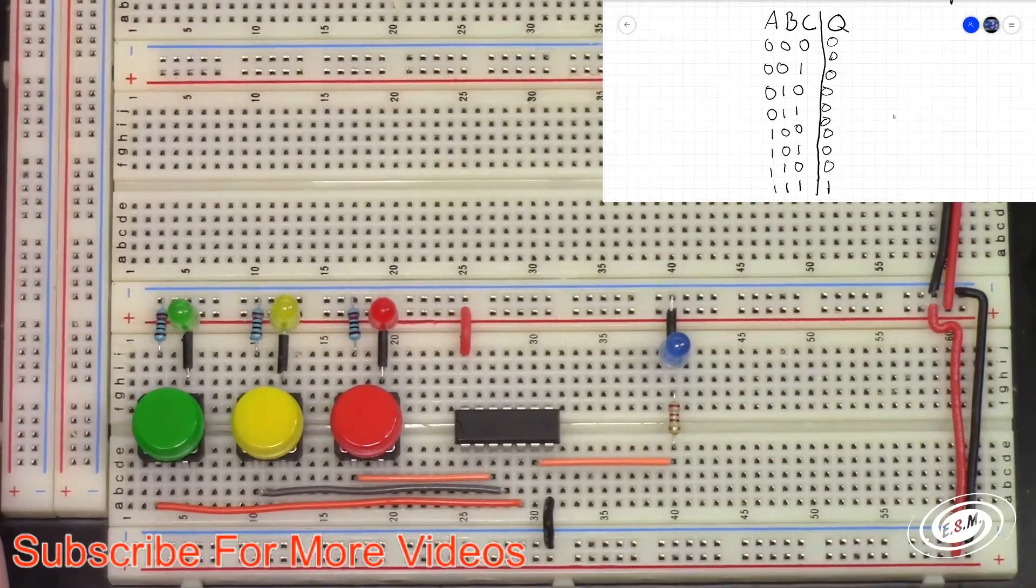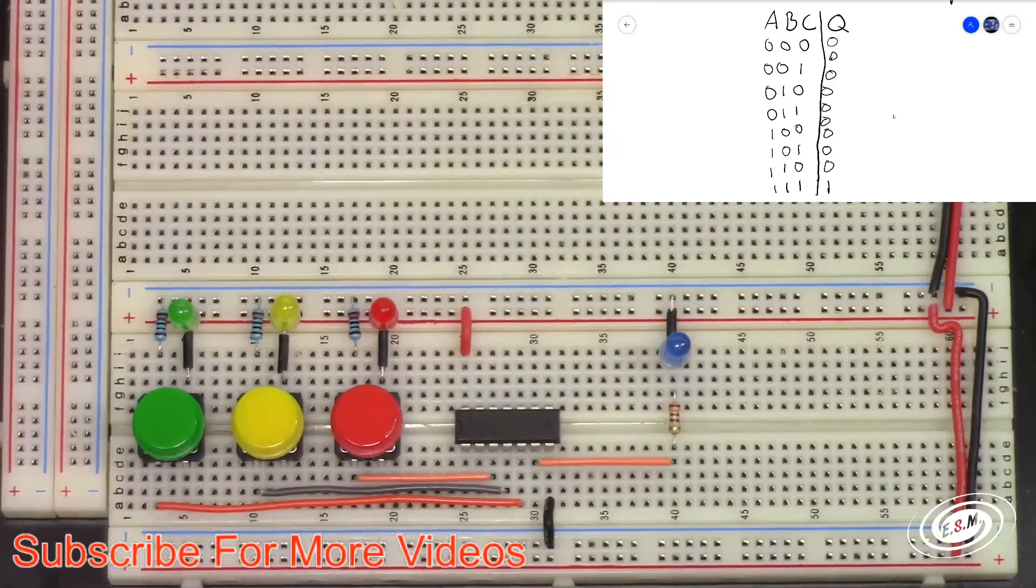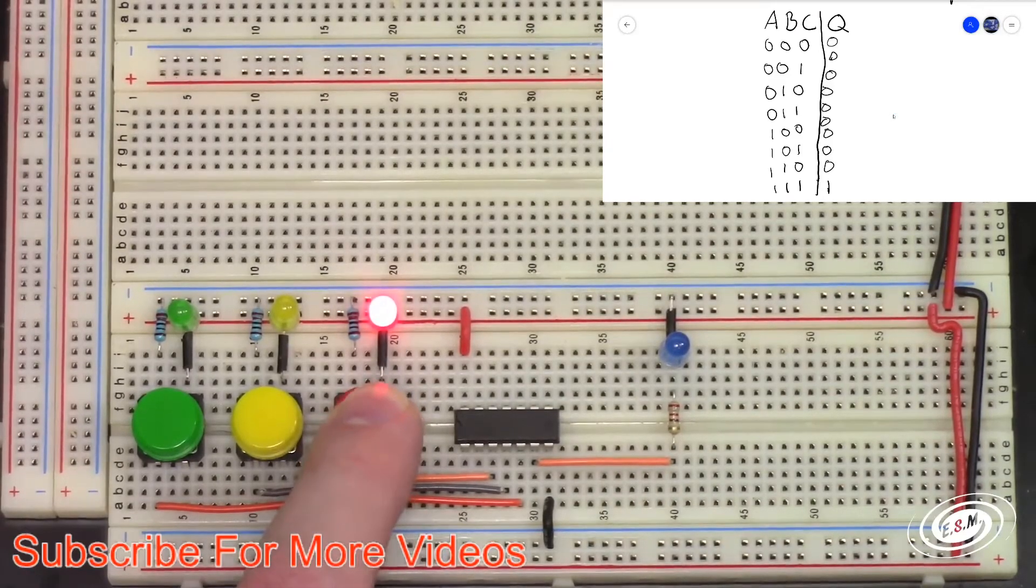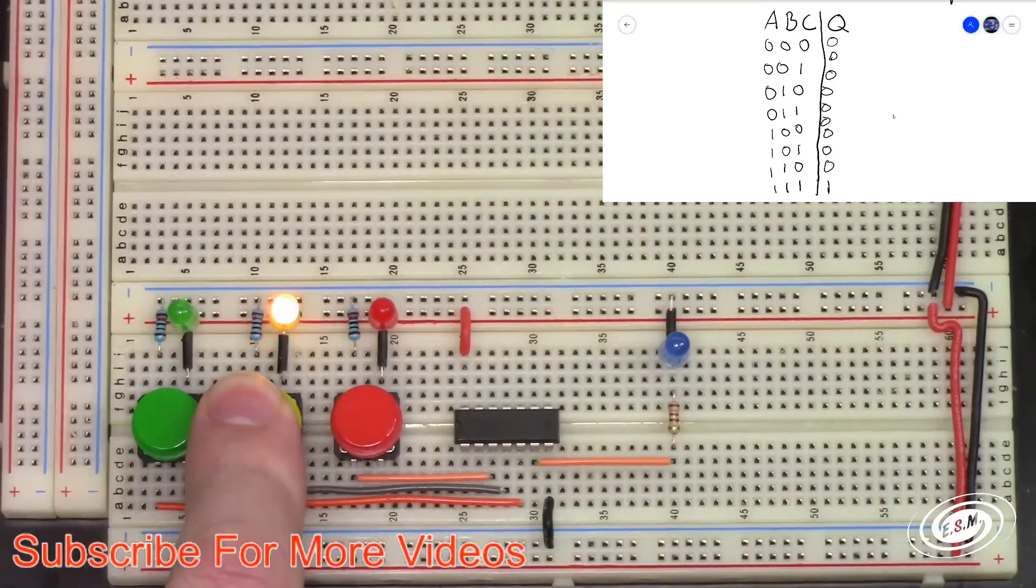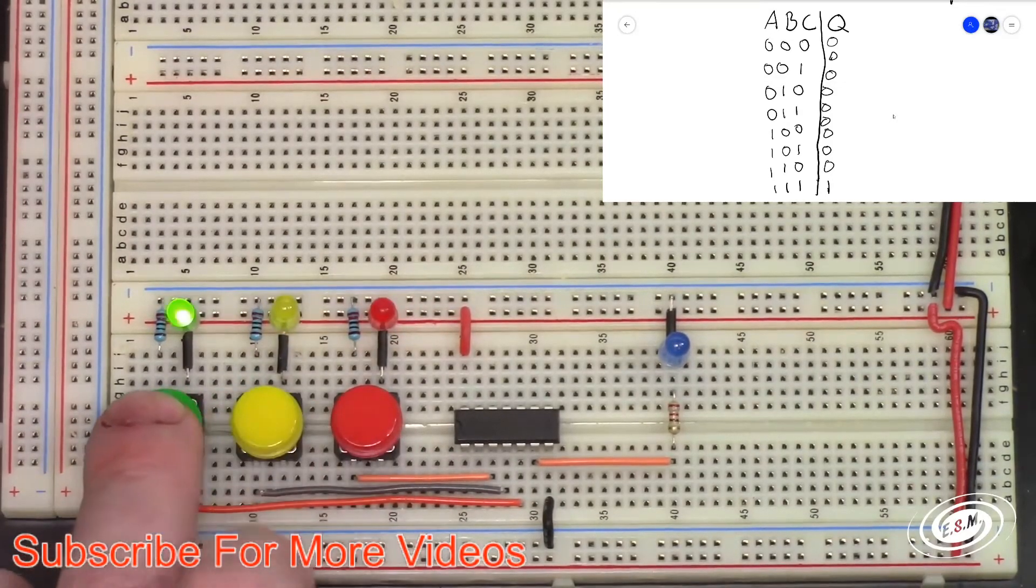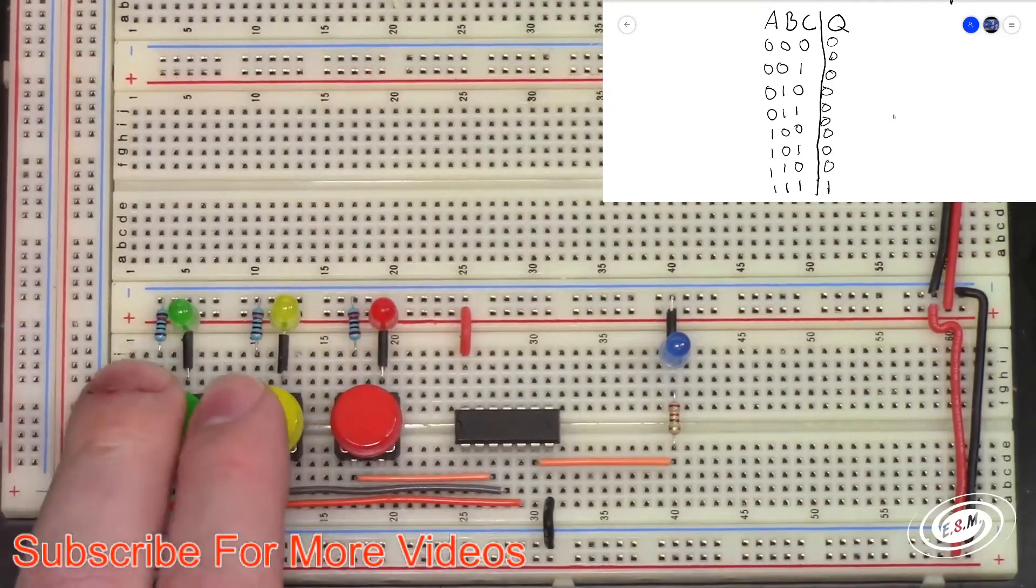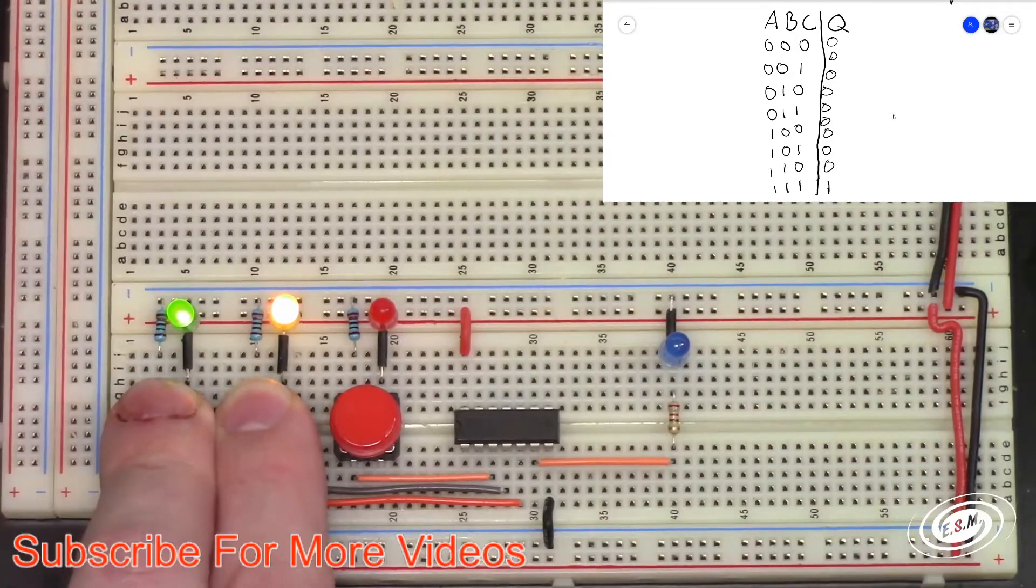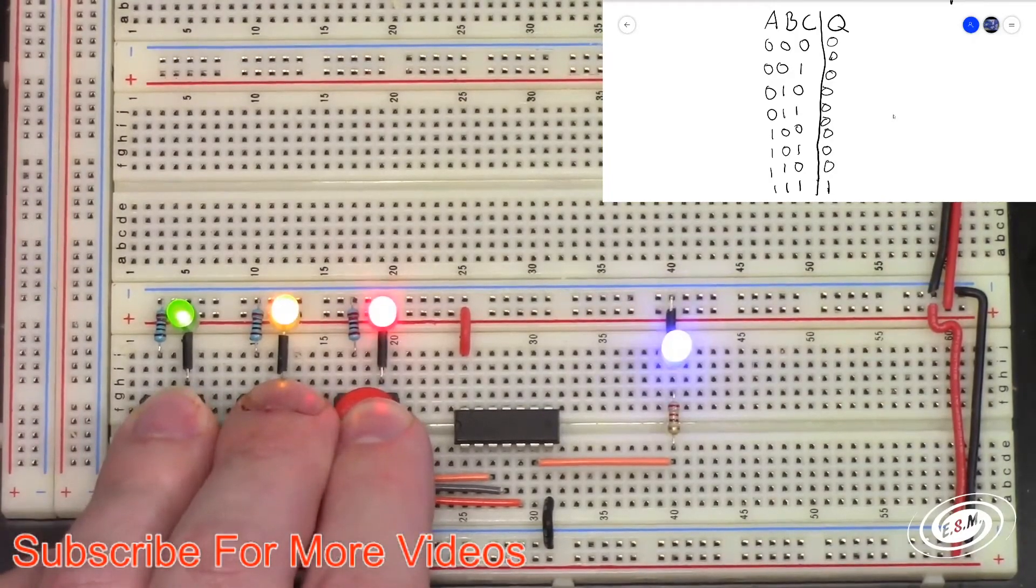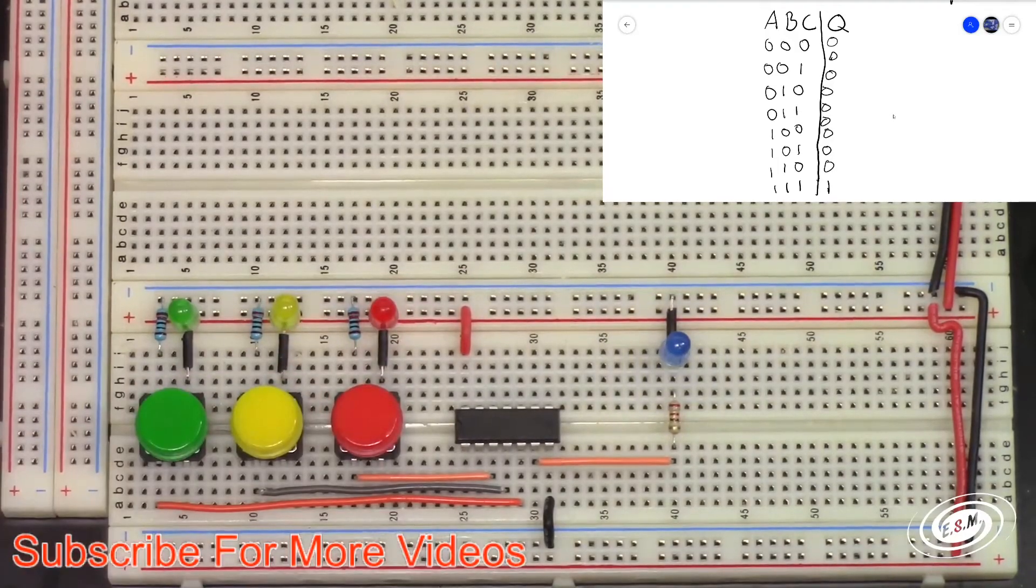Get it right in the middle there. So zero zero zero we have a zero, press this one still zero, press this one that's two, that's three in binary, that's four in binary, that's five, that's six, and then there is seven and it lights. So if all three are pushed it lights so it's the truth table we proved that it's all true.